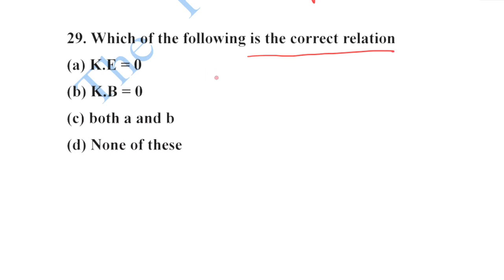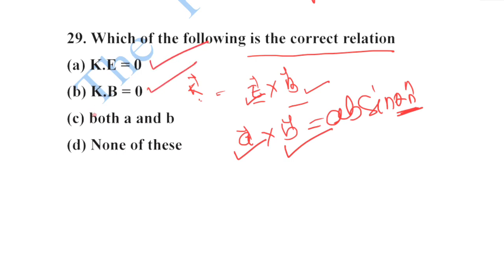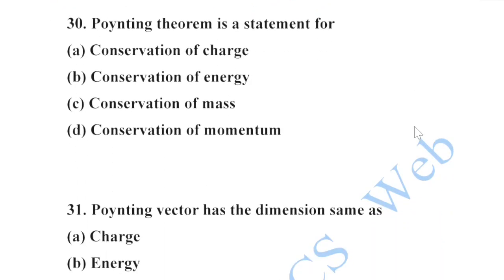Next: the propagation vector k is given by the cross product of electric field and magnetic field. From the cross product, the propagation vector is perpendicular to both E and B vectors. Since the dot product of two perpendicular vectors is zero, both relations k·E = 0 and k·B = 0 are correct, so option C (both A and B) is your correct option.